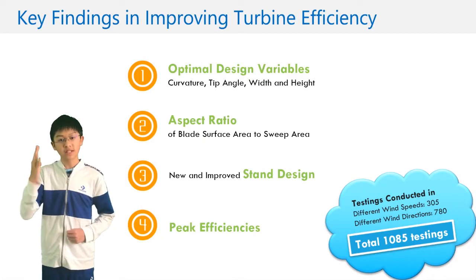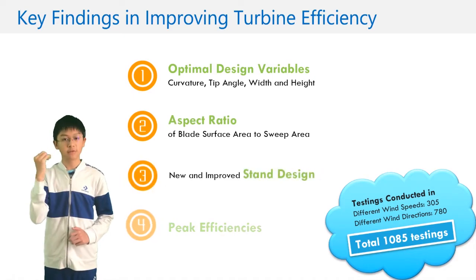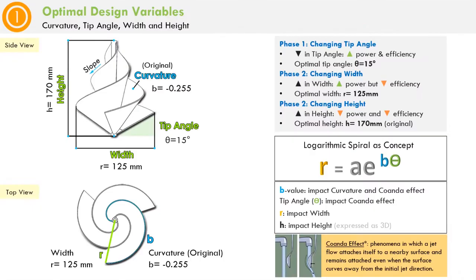I discovered four key findings: optimal points, aspect ratio, stand design, and peak efficiencies. Number one, optimal design variables are reached at a B value of negative 0.255, a tip angle of 15 degrees, a height of 170 millimeters, and a width of 125 millimeters. Any changes in these variables will affect the curvature, surface area, and weight.